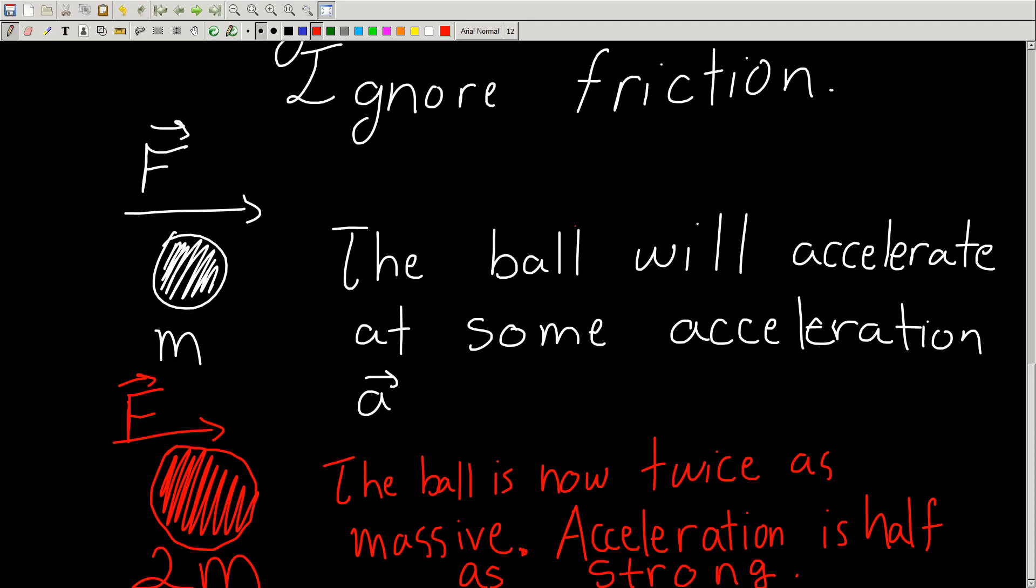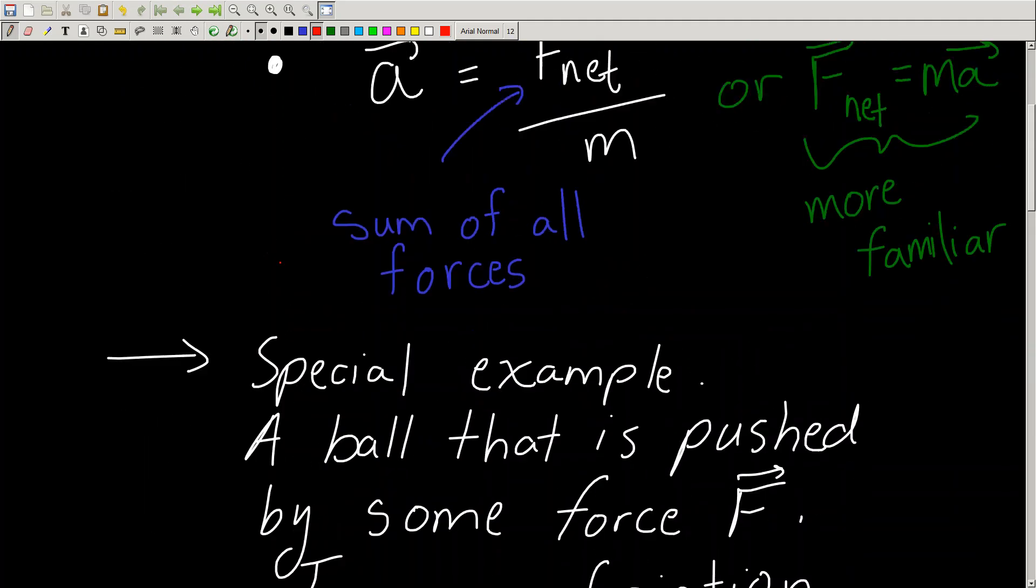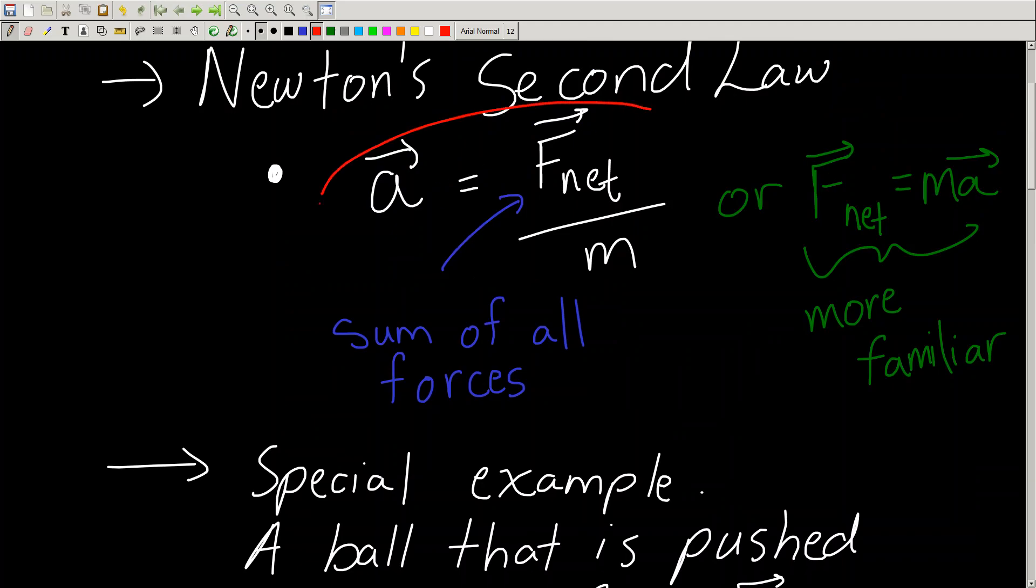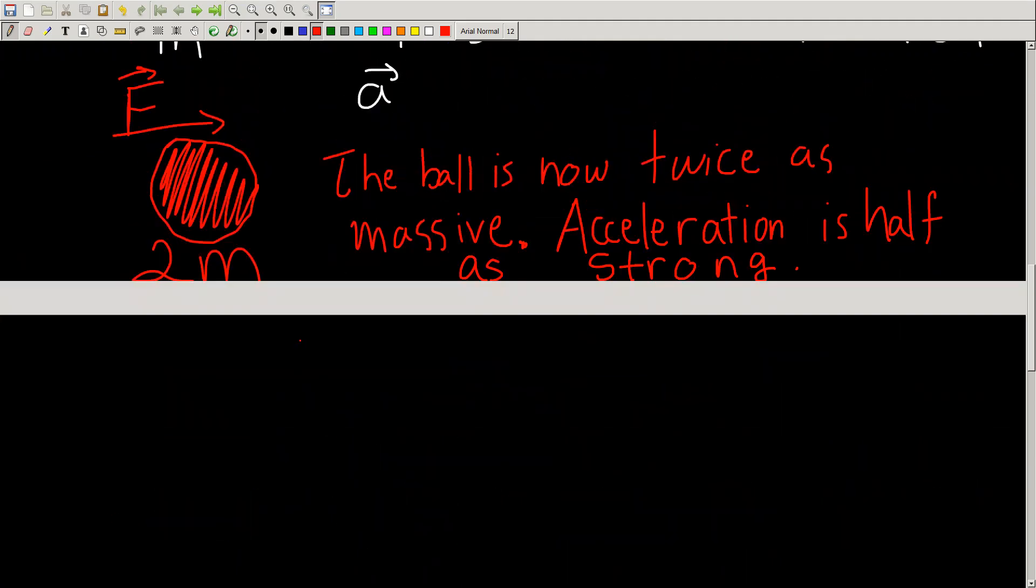So because you double the mass, you will half the acceleration. That is a consequence of the formula. So if you look at the formula, what we say here is that A is inversely proportional to M. Meaning, if M gets bigger, A gets smaller. So it's due to that formula.